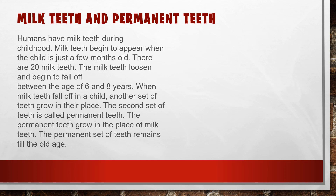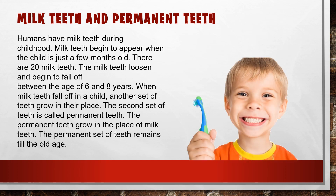Let us see milk teeth and permanent teeth. Humans have milk teeth during childhood. Milk teeth begin to appear when the child is just a few months old — around six to seven months. There are 20 milk teeth. The milk teeth loosen and begin to fall off between the age of six and eight years.